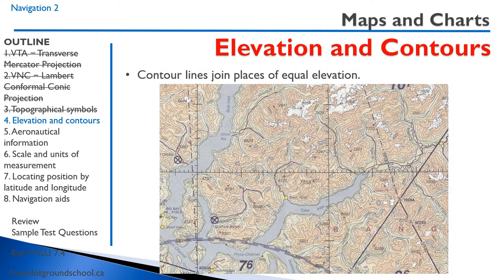Contour lines join places of equal elevation. On the VNC — here's an example from the Vancouver VNC — you can see topographical features where the color changes as elevation increases. Spot heights are given, such as 4,641 feet. Contour lines are sometimes labeled with their elevation — for example, 2,000 feet — and you can also reference the color against the legend on the front of the map.